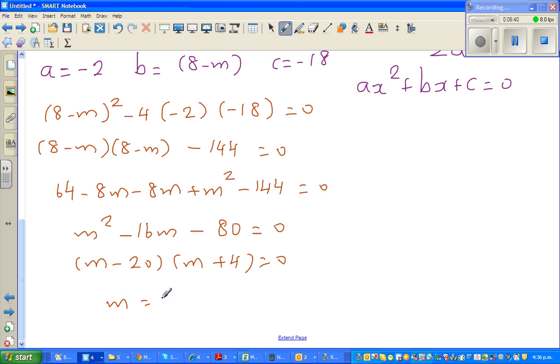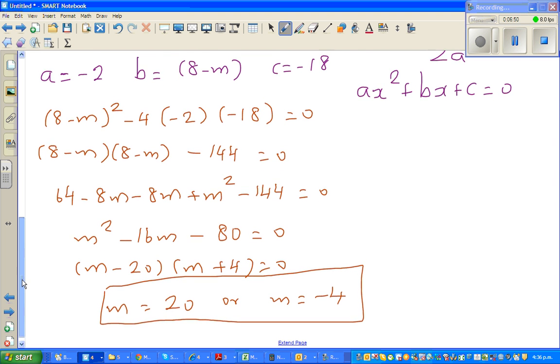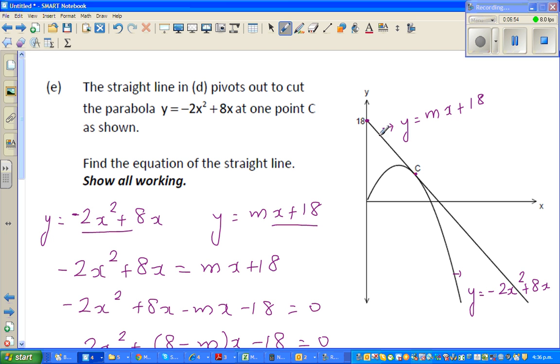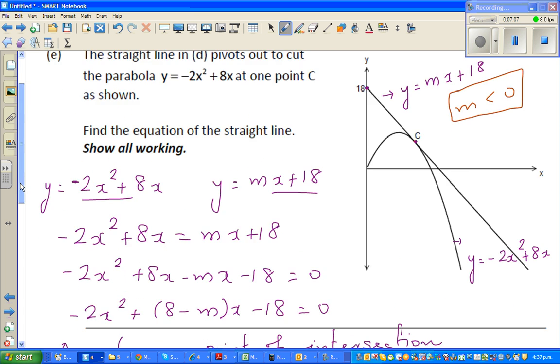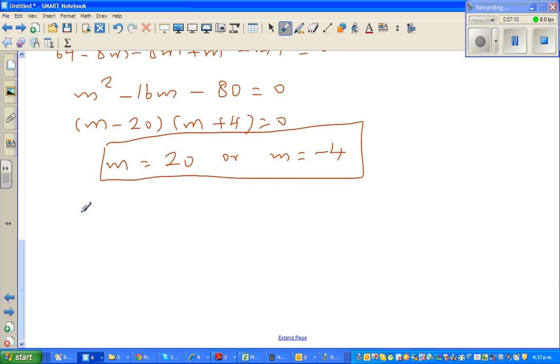Now which of them is true in this case? So m, the gradient of this line, can it be positive? From left to right it's sloping down. So m has to be, here we can write m is less than 0. That's one thing that you can see by just looking at the line. m has to be less than 0. So here we can write but m is, but m is less than 0, which implies m cannot be 20. Therefore, m is negative 4.